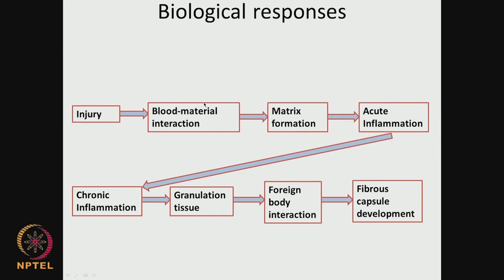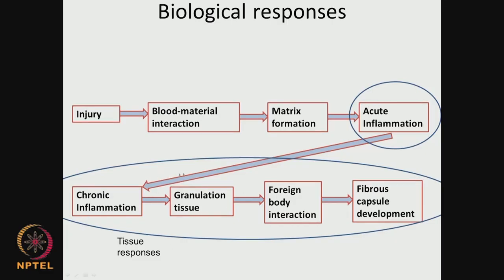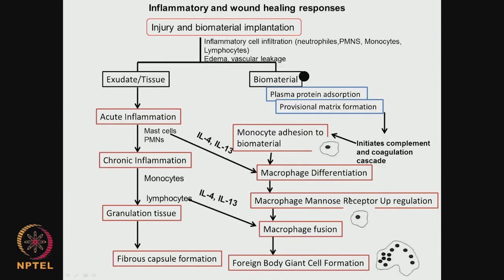Let us continue on the biological response. As soon as the biomaterial is placed inside the body, there is going to be a blood-material interaction leading to the activation of the coagulation pathway, and then the activation of the complement pathway — both of them are part of the immune response system. Then inflammation starts as part of the tissue response: acute inflammation, chronic inflammation, tissue formation, foreign body interactions, and fibrous encapsulation of the material.